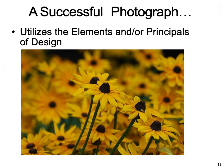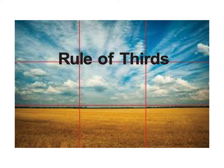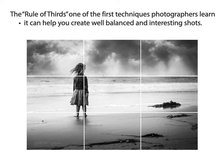A successful photo is going to utilize the elements and principles of design, just like we learned in chapter one of the Design 121 class. Now let's talk about the rule of thirds. This is the principle of breaking your image into three columns and three rows. The rule of thirds says if you line up your subject along one of the vertical leading lines, or place your focus point at the intersections of those rows and columns, that's going to create a lot of tension and visual interest. It's one of the first techniques photographers learn and it really helps create a well-balanced and visually interesting shot.